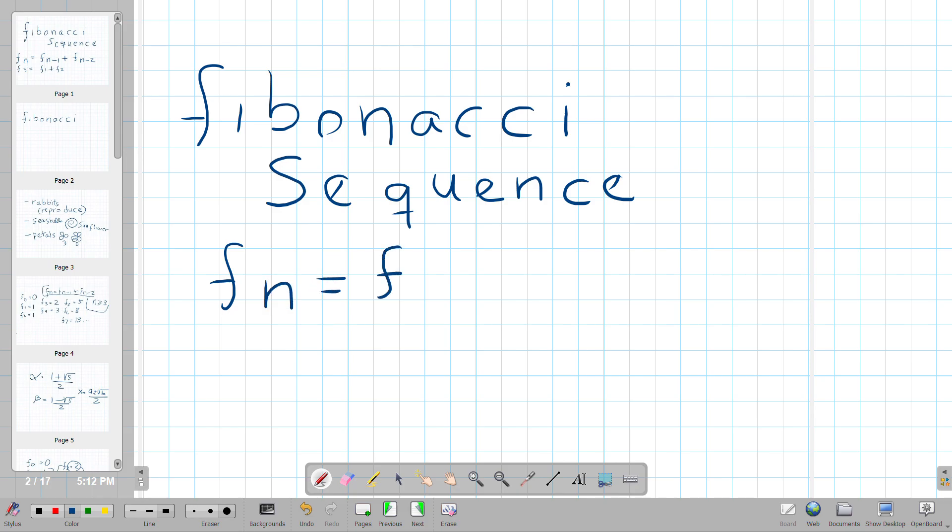Whatever term in the sequence you have is equal to the sum of the two previous numbers. And these are all integers. Well, these are actually natural numbers. You could say it this way: every member of the sequence is a natural number.